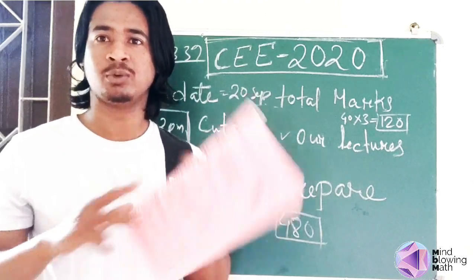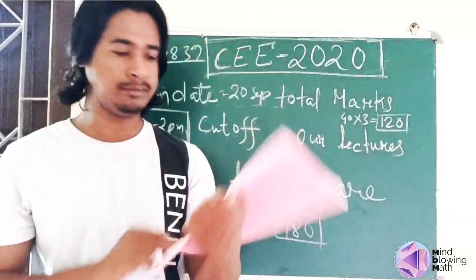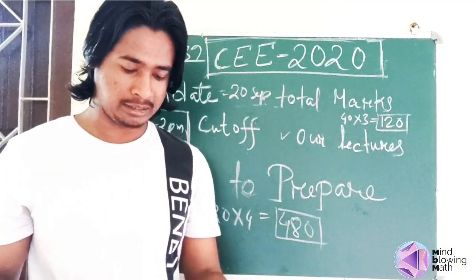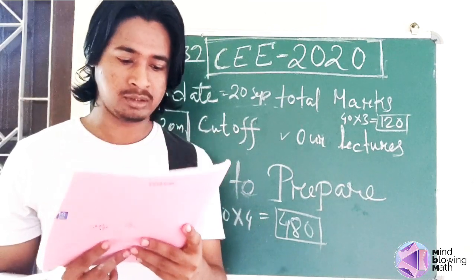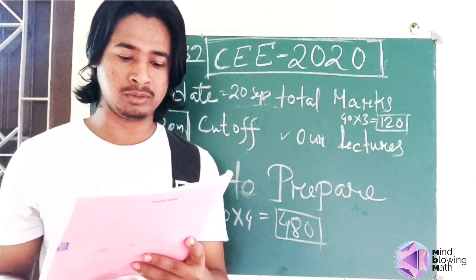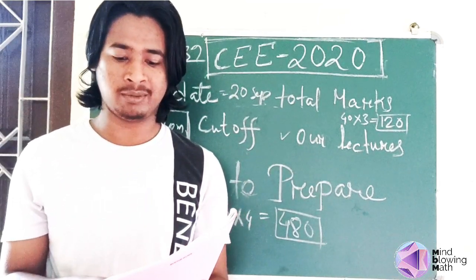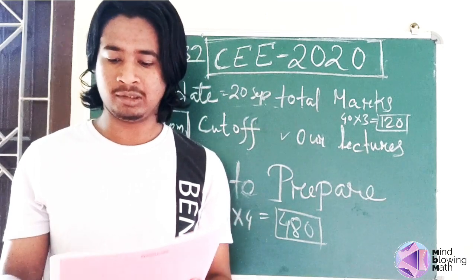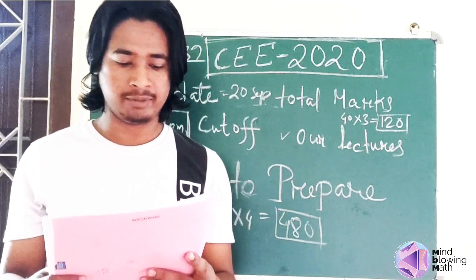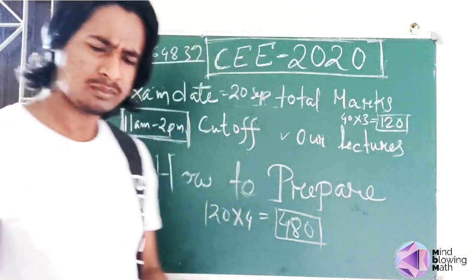This is the question pattern before 2019. Here is an important point: 4 marks will be awarded for every right answer, and for every wrong answer, one mark will be deducted.